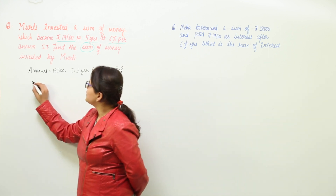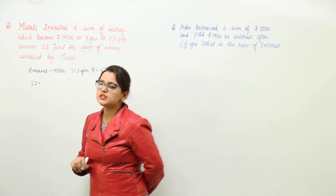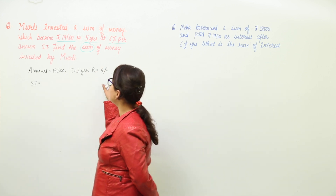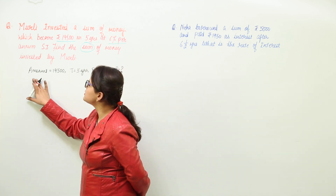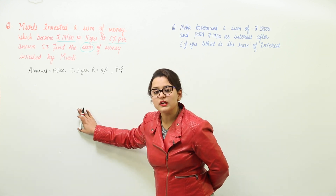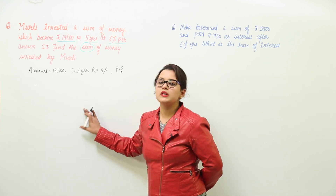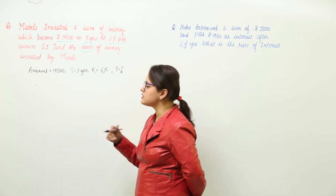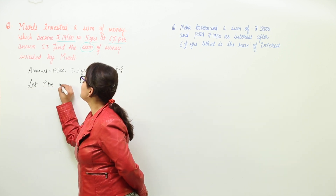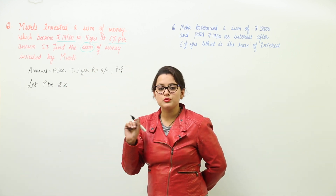We can start with simple interest, but to find simple interest we need the principal first. Since the principal is unknown, we should not start with simple interest — because simple interest again requires the value of principal. So first, let us assume: let principal = rupees x.